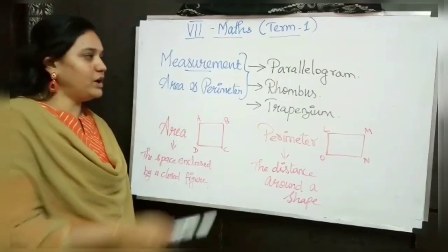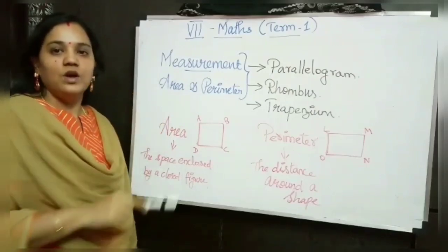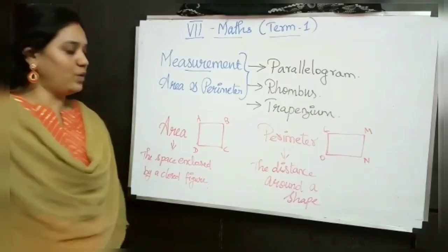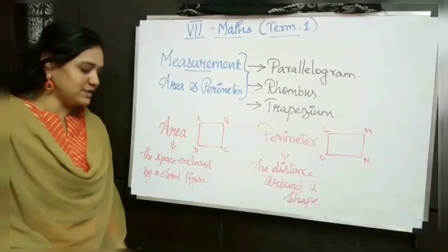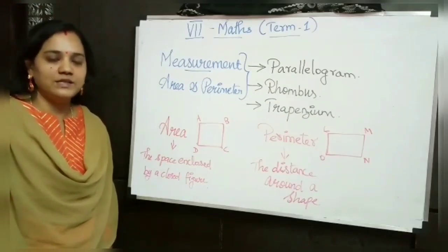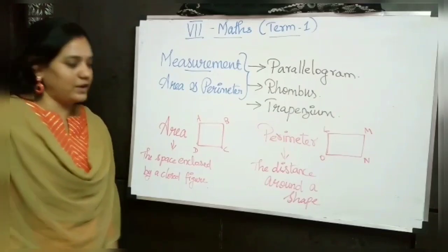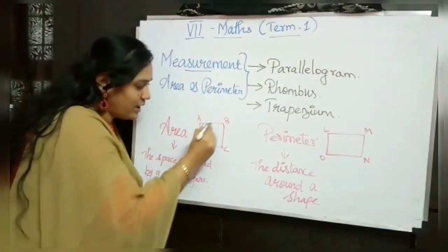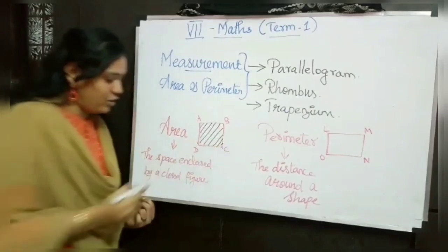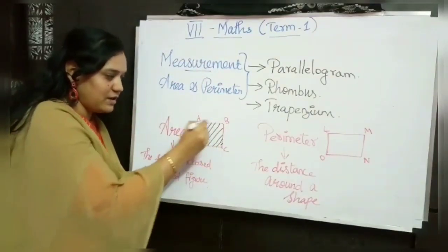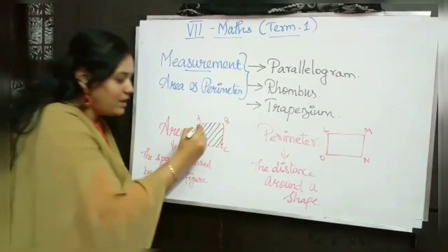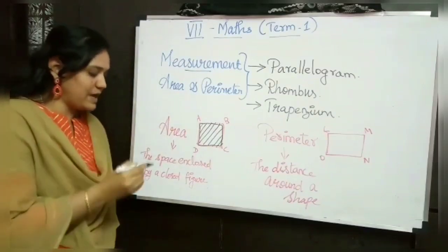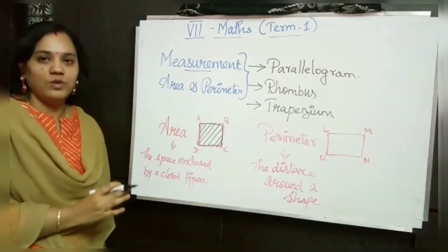Before learning the area of these new shapes, you should know what is meant by area and what is meant by perimeter, so let us recall that. Area is the space enclosed by a closed figure. For example, I have taken a square ABCD and the area of this square is nothing but the space enclosed by that closed figure — that is this part we have to find out.